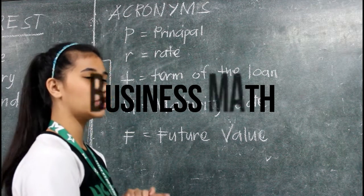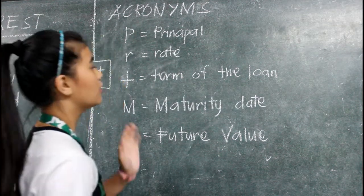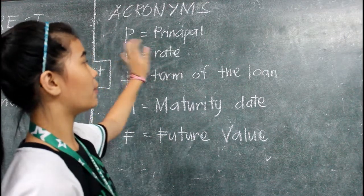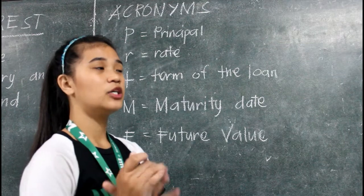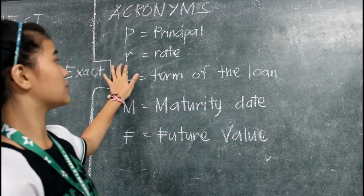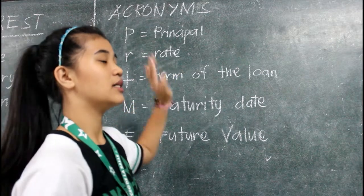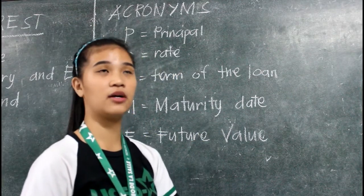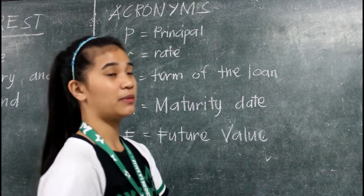First, let's check the acronyms that we are going to encounter in this topic. We have the big letter P for principal. Principal is the amount of money you borrowed or you invested. Second is the small letter R. Rate is the percent of the principal paid for the use of money on a certain length of time in an investment or loan.